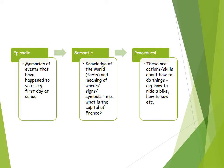Semantic memories are knowledge of the world around us — they are facts, meanings of words, signs, and symbols. For example, if asked to recall the capital of France, you would say Paris. They are shared knowledge, so everyone will have the same semantic memory, such as knowing that Paris is the capital of France or that H is the atomic symbol of hydrogen. They are less personal because everybody has that shared information.